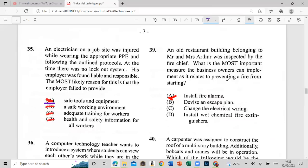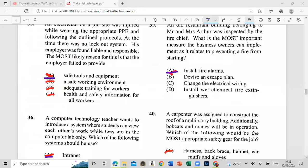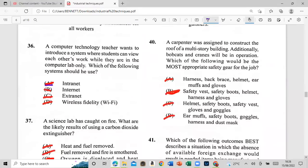An old restaurant building belonging to Mr. and Mrs. Arthur was inspected by the fire chief. What is the most important measures the business owners can implement as it is preventing a fire from starting? And that is A: installing fire alarms. All right, so let's go, 20 to go. It's 13, 20 minutes, still up, still with the energy still. All right, like just that. 41, 40 now, right?